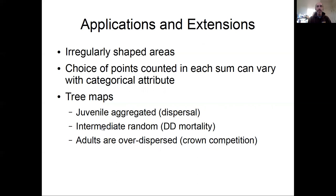At intermediate stages, medium sized trees tend to be fairly randomly dispersed. And that's because processes like density dependent mortality take this aggregated pattern that we see in the juveniles and preferentially thin them out. And then for adults in the canopy, we often find them to be over dispersed because their crowns compete with each other. And so they are more regular than you would expect by chance because of competitive processes.